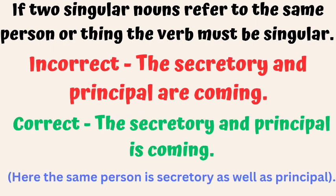If two singular nouns refer to the same person or thing, the verb must be singular. For example, 'The secretary and principal are coming' is incorrect. 'The secretary and principal is coming' is correct. Here, the same person is secretary as well as principal.